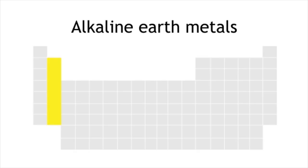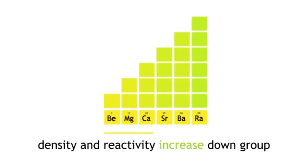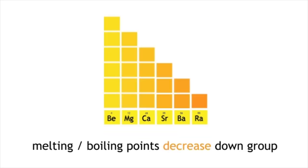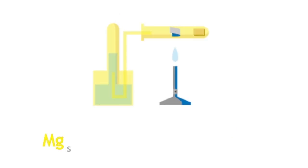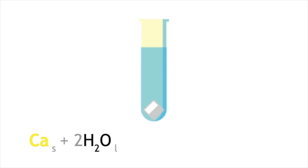In summary, the alkaline earth metals are the group two metals. They exhibit similar properties and reactivity trends to the alkaline metals. Magnesium and calcium react with oxygen to form their respective oxides. Magnesium reacts with steam to produce magnesium oxide and hydrogen gas. Calcium reacts with cold water to produce calcium hydroxide and hydrogen gas.